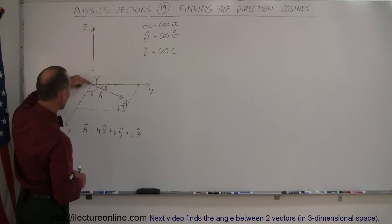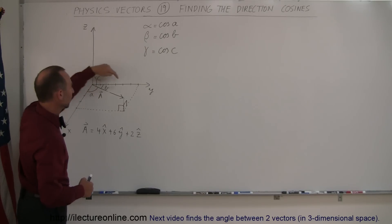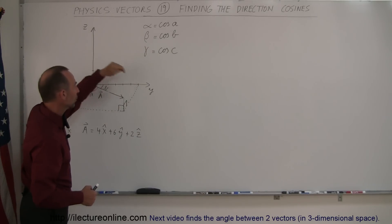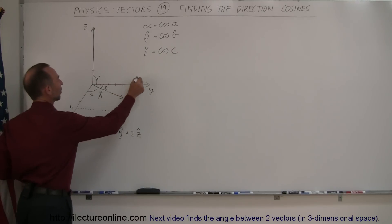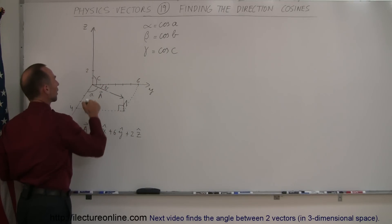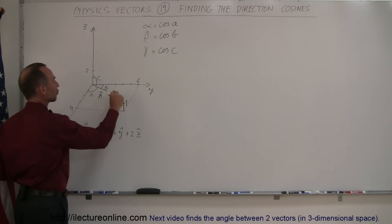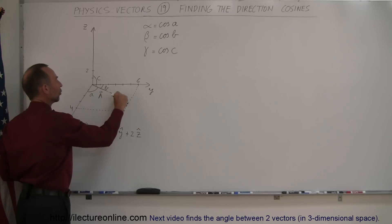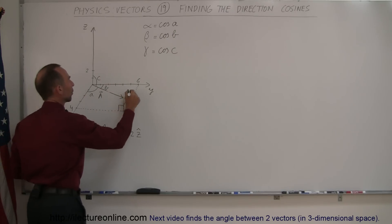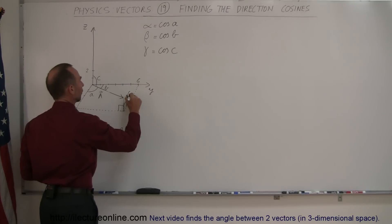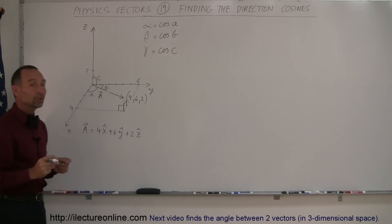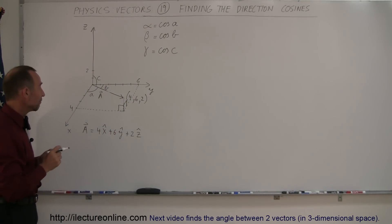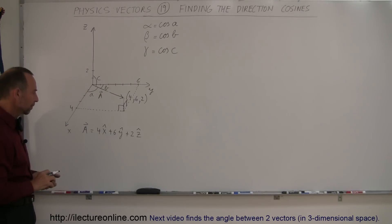So you can see if you go 4 units out in the x-direction, 6 units out in the y-direction, and 2 units out in the z-direction, then you draw a vector from the origin to that point in space, which is defined by the coordinates (4, 6, 2), then you have indeed the vector A pointing in that direction.